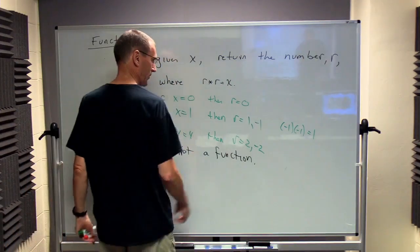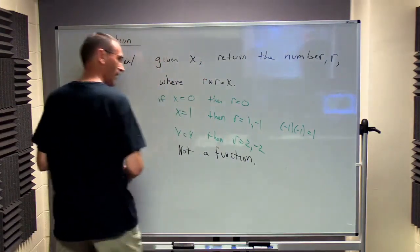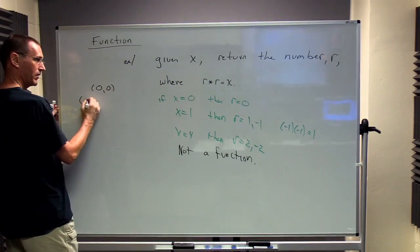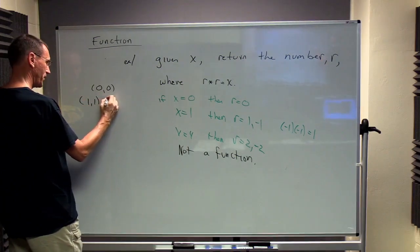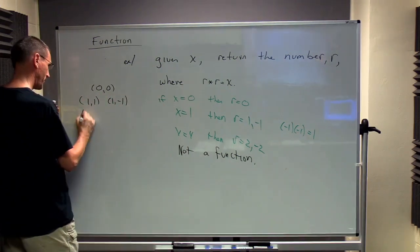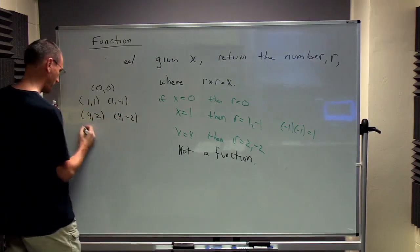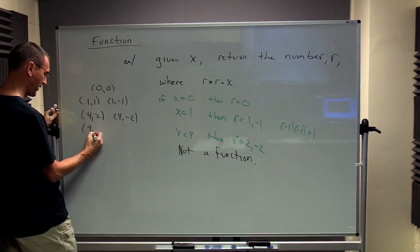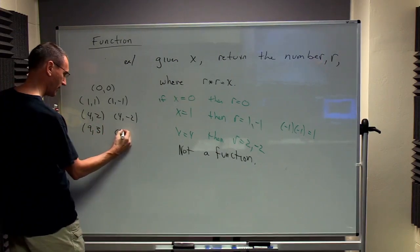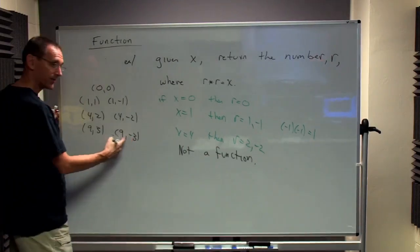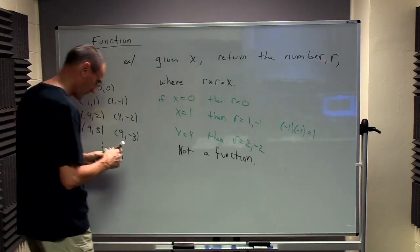Let's look at this graphically. So let's remember this. These points, what do I have? I've got X equals 0, R equals 0. X equals 1, R is 1 or minus 1. If I have 4, I've got 2 or minus 2. If I had 9, I'm going to have 3 or minus 3, because 3 times 3 is 9. Minus 3 times minus 3 is 9. It goes on like this.